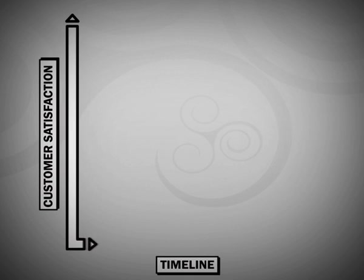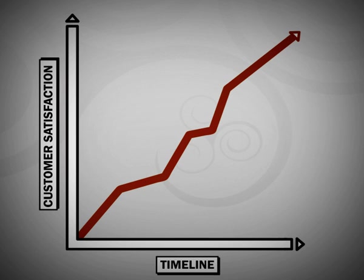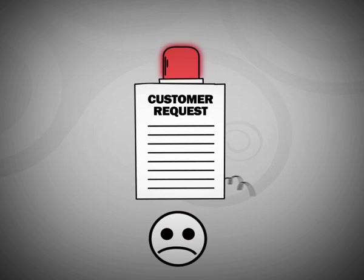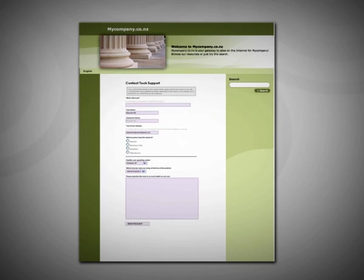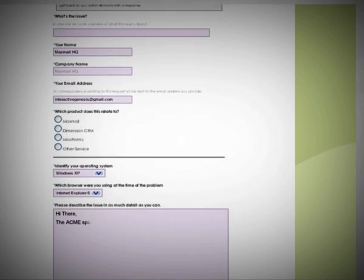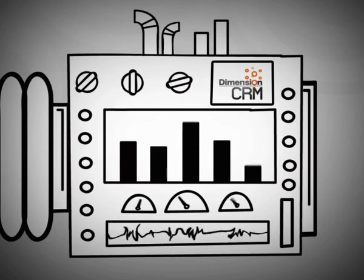Great customer service leads to stronger and more profitable business relationships over time. With the customer service module, you can easily raise and track customer service requests, keeping everyone in the loop with regards to progress and responses. You can even set up your own customer self-service portal on your website using the case management APIs available, allowing you to start tracking requests coming from your website directly inside Dimension CRM.